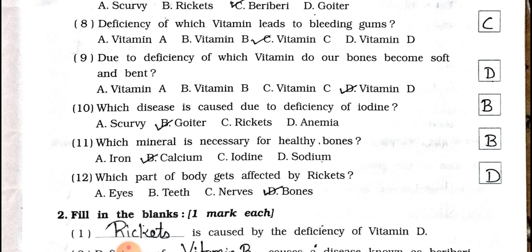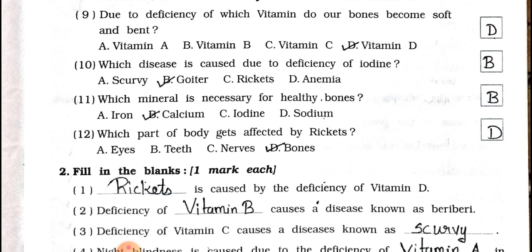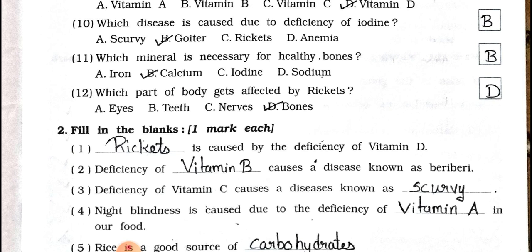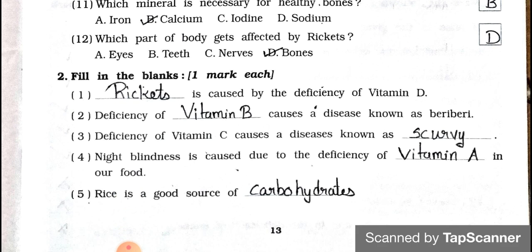Number ten: which disease is caused due to deficiency of iodine? A) Scurvy, B) Goiter, C) Rickets, D) Anemia. Answer is option B — Goiter. Number eleven: which mineral is necessary for healthy bones? A) Iron, B) Calcium, C) Iodine, D) Sodium. Answer is option B — Calcium. Number twelve: which part of the body gets affected by rickets? A) Eyes, B) Teeth, C) Nerves, D) Bones. Answer is option D — Bones.